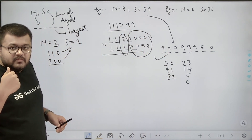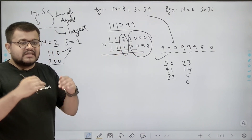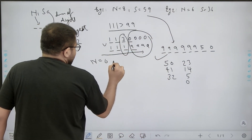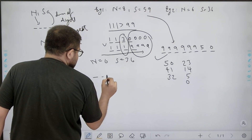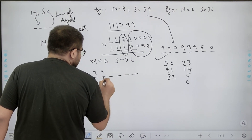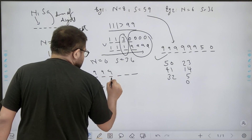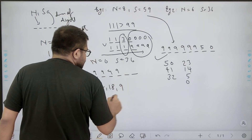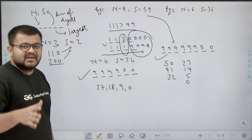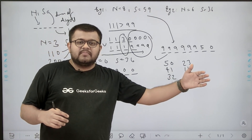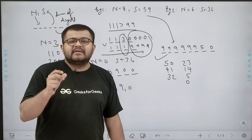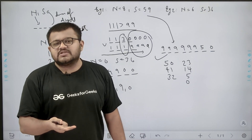So basically, starting from the most significant digit and moving towards the least significant digit, at each step I place the largest digit possible. For the second example, n equals 6 and sum equals 36: starting with 9, remaining sum is 27; place 9 again, remaining sum is 18; place 9 again, remaining sum is 9; place 9 again, remaining sum is 0; so I place 0 and 0 for the last two positions. This gives the largest number possible. This is the concept — we move from MSB to LSB across all n digits and at each place store the largest digit possible.